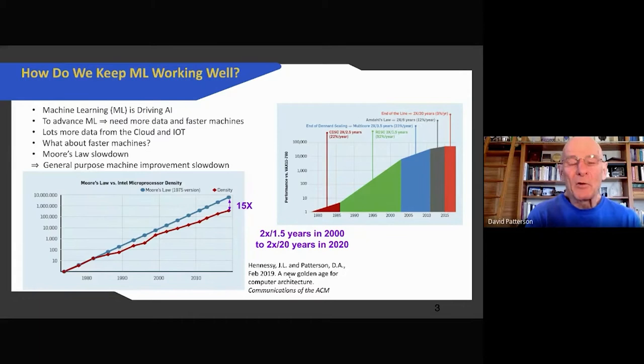So what we see is advances in AI is really advances in deep neural networking starting to work. So why is it starting to work? These aren't new algorithms. The algorithms have been around 20 years. What's happened is that we needed a lot more data and a lot faster machines than when those algorithms were invented. It's easy to get more data today from the cloud and internet of things devices, but what about faster machines?